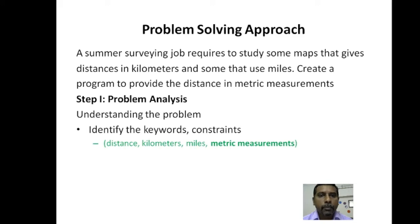Why we say metric measurement as a constraint? Read the last sentence of the problem. Create a program to provide the distance in metric measurement. They want us to provide the distance, but they want us to provide the distance in metric measurement. So you should provide the distance only in metric measurement. Now that metric measurement becomes a constraint for this problem.